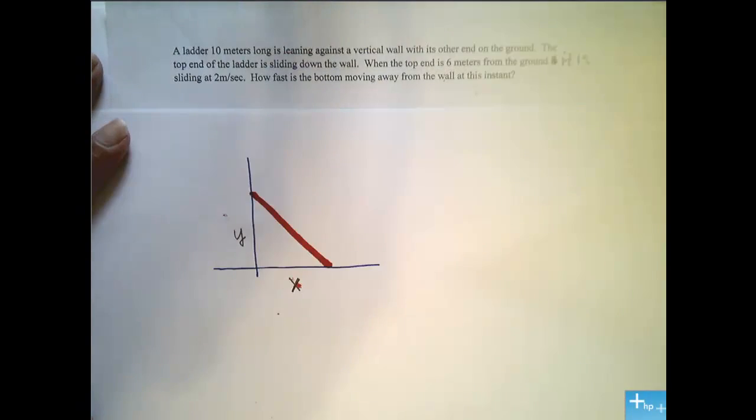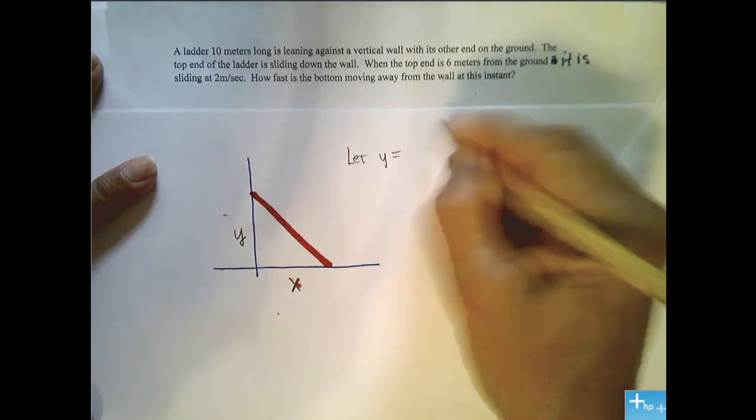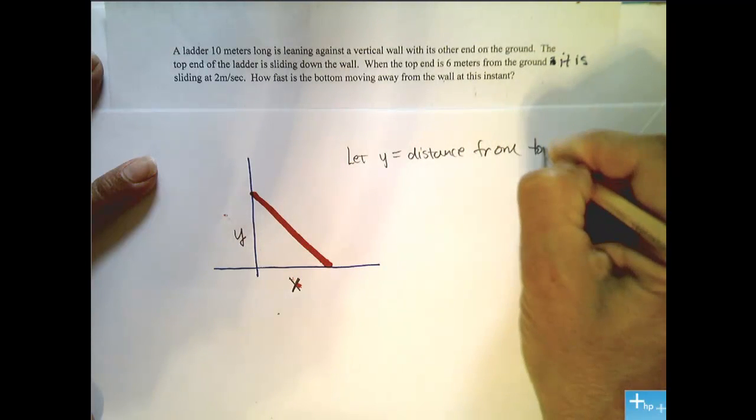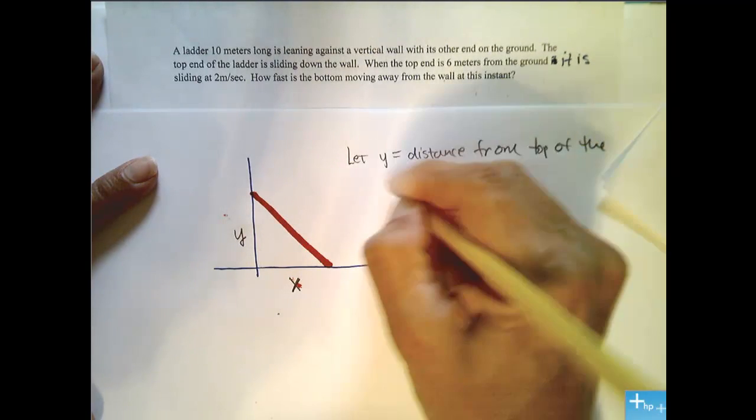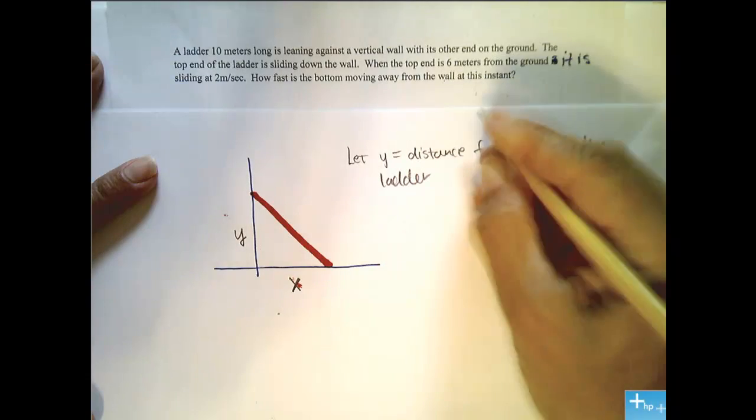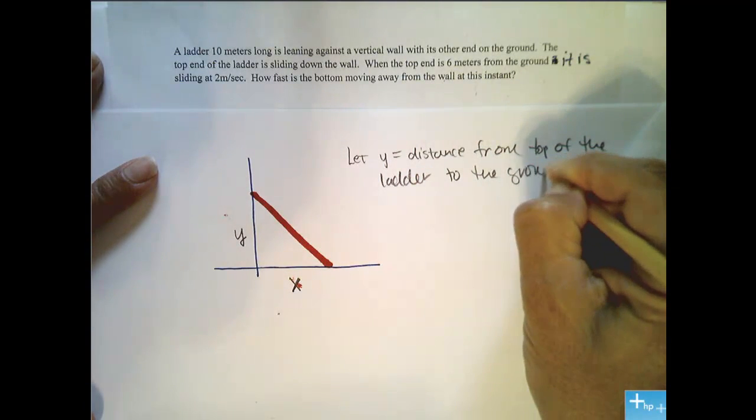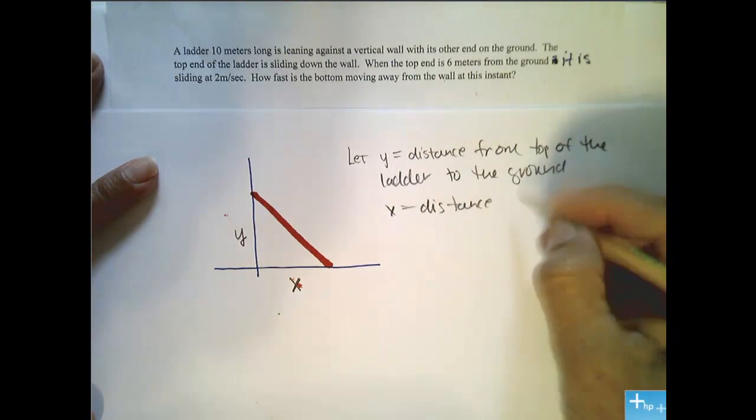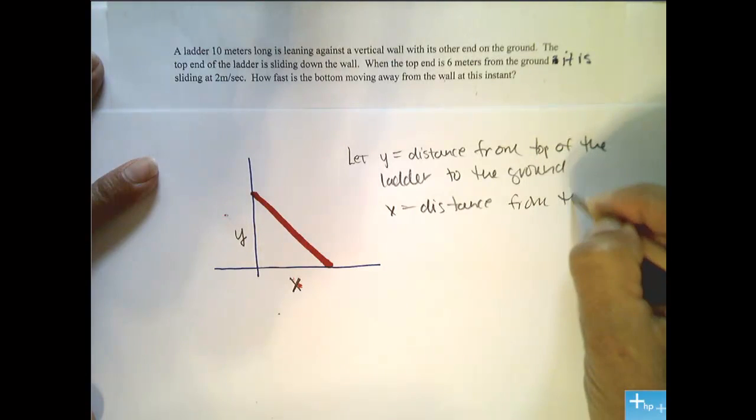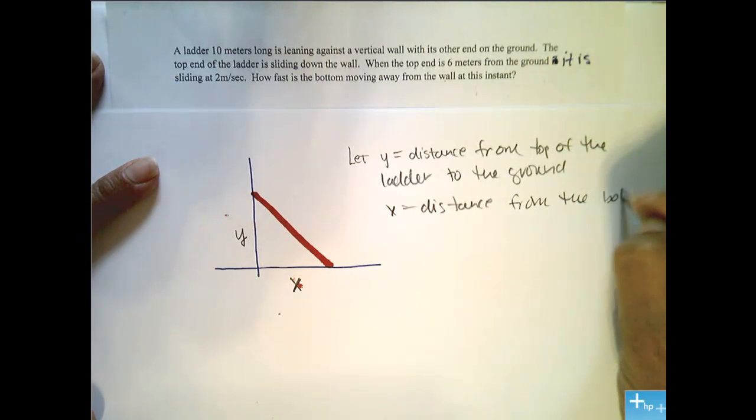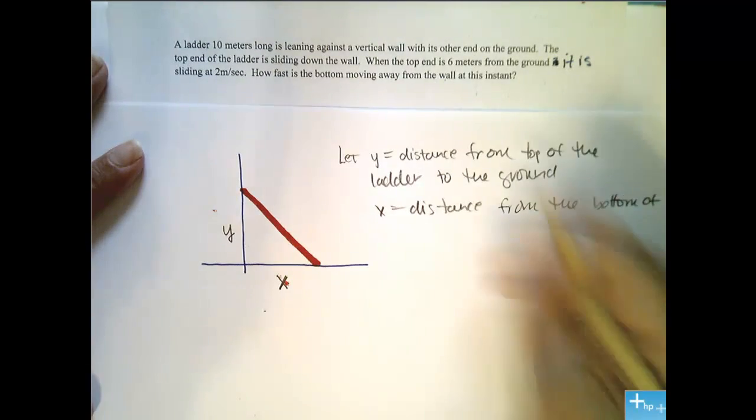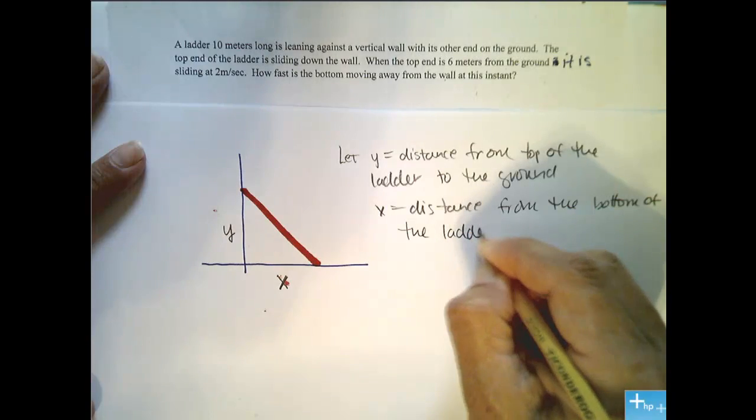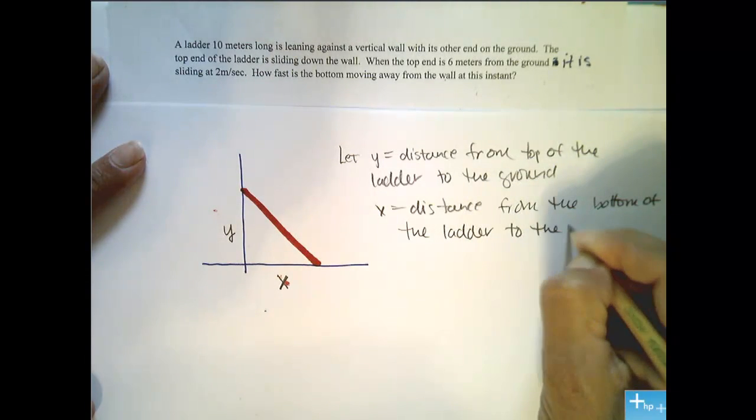Now we should write, let y equal the distance from the top of the ladder to the ground. And we'll say that x equals the distance from the bottom of the ladder to the wall.